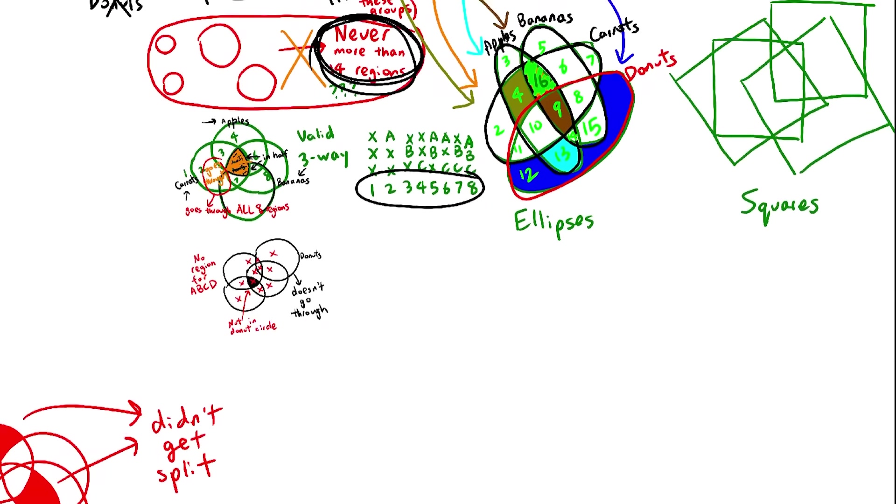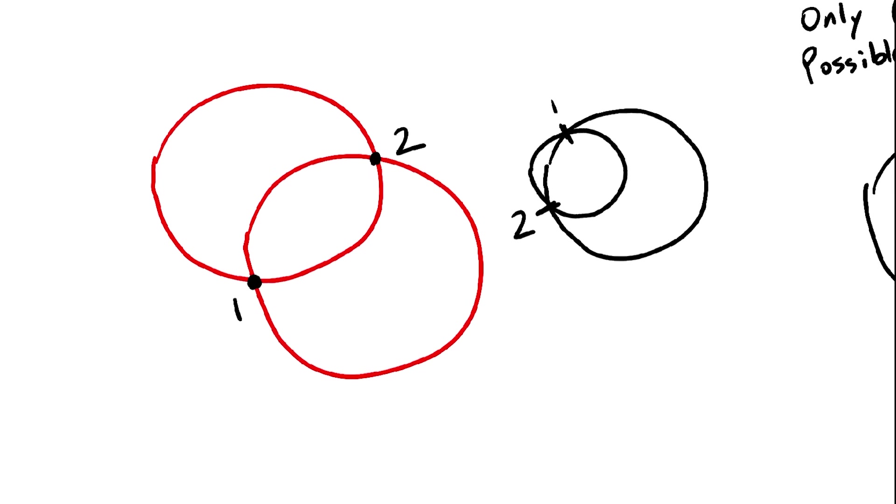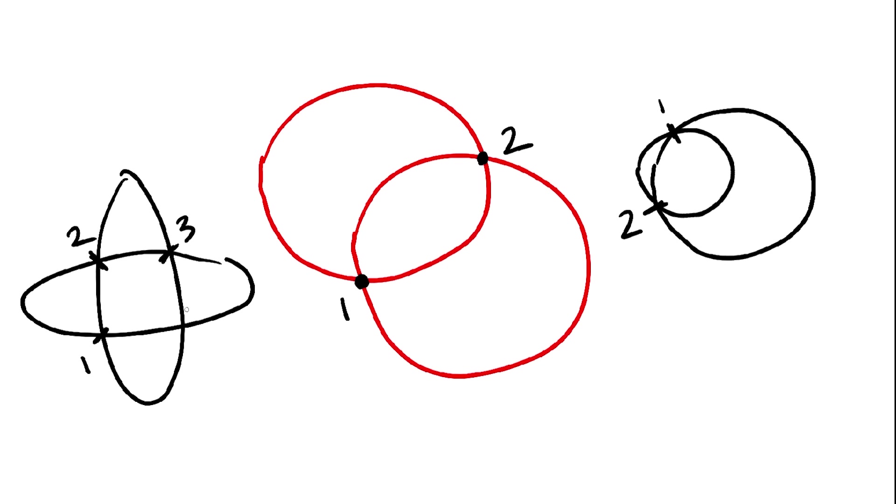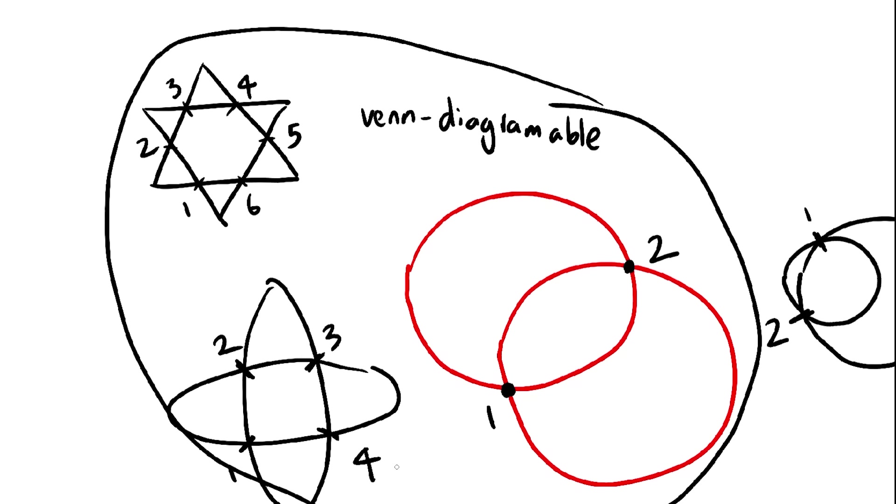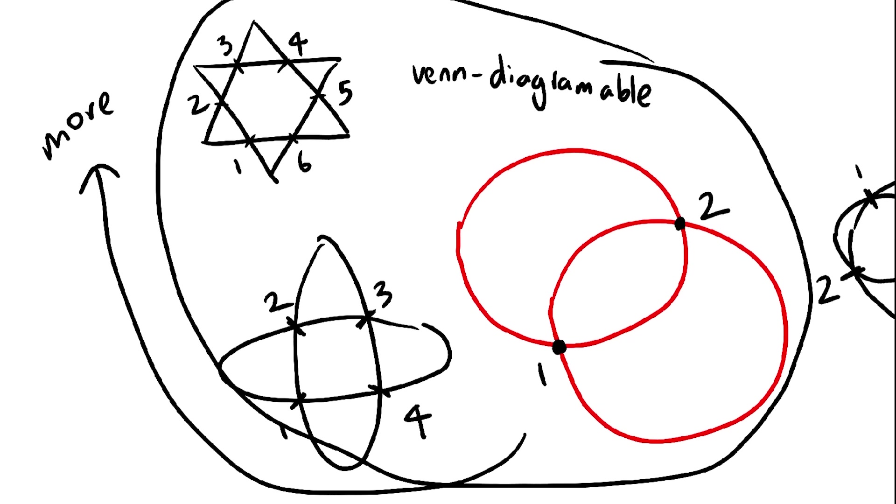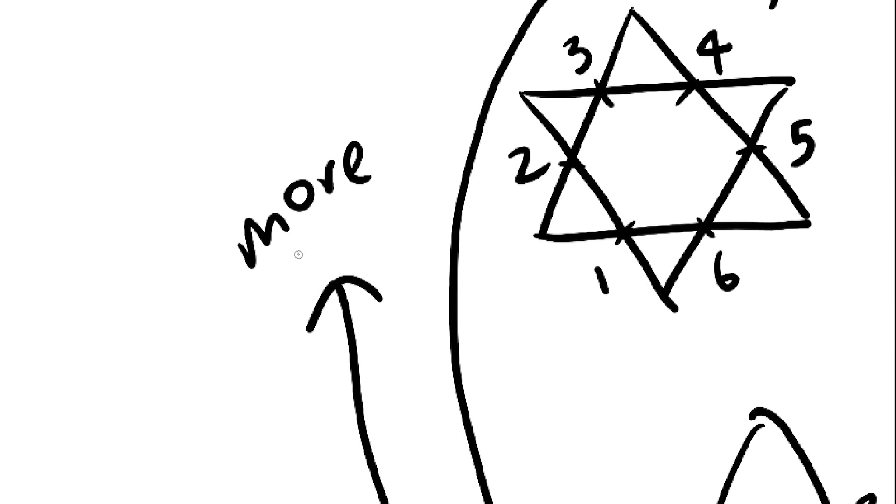So then, what's different about ellipses or triangles? It's the intersection points. Ellipses can intersect with themselves up to 4 times, and triangles 6 times. This property is what decides how Venn diagrammable a shape is. The more intersection points it can form with itself, the more likely it'll be able to form higher order Venn diagrams. How do you know the amount of intersection points that can form?